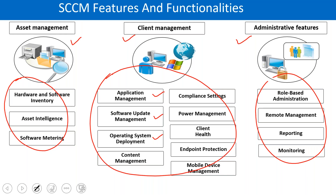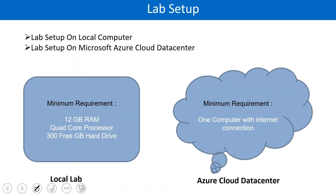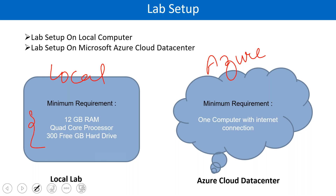You all have to set up your lab, either on your laptop or desktop, or you can do it on Azure — on the cloud. Either this is going to be on local or you do it on Azure. You have to do it so that you will get the practical knowledge. For a local lab, you need minimum 12 gigabytes of RAM, a quad-core processor, and 300 GB of hard disk. Otherwise, you can go on Azure.